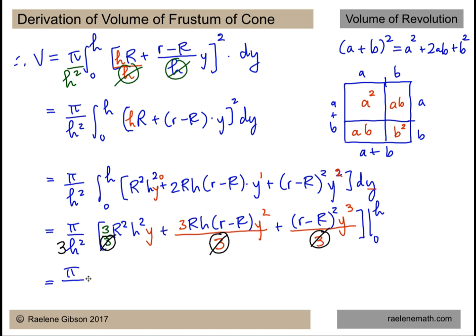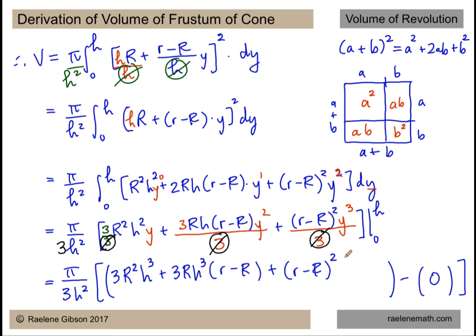So now we have π divided by 3h² and when we expand we know that we are going to evaluate with the top bound plugged in minus the bottom bound plugged in. The bottom bound is going to be plugged into a polynomial where each term can be substituted for zero. So the second term is going to be zero. So when we substitute h in for y we get 3R²h³ plus 3Rh³(r-R) and lastly we get (r-R)² times h³.